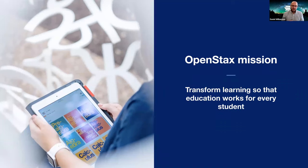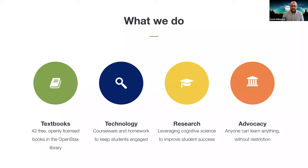At OpenStax, our mission is to transform learning so education can work for every student. The ways that we do that are really fourfold: our textbooks, courseware and homework technology to keep students engaged, a full suite of researchers that look at ways to leverage cognitive science to improve student success, and advocacy for ways to improve access and learning for all students — both on campuses and in the legislature. Today I'm going to be talking mainly about this fourth bucket, this advocacy bucket.